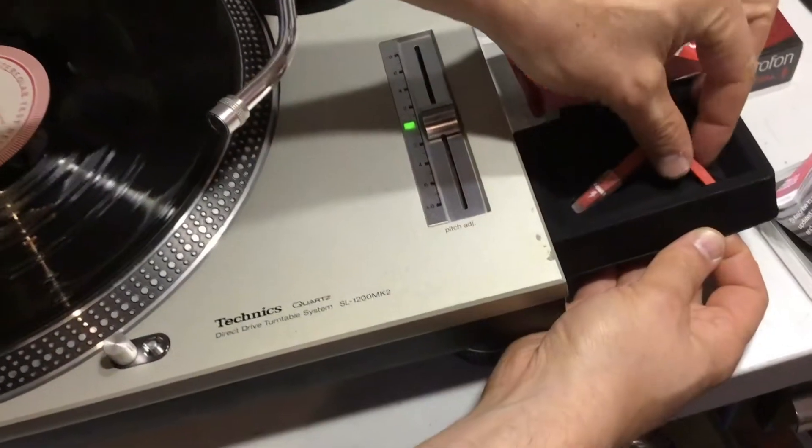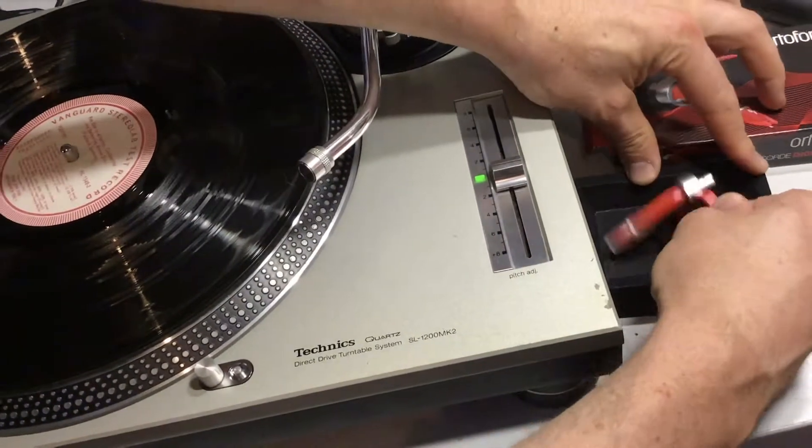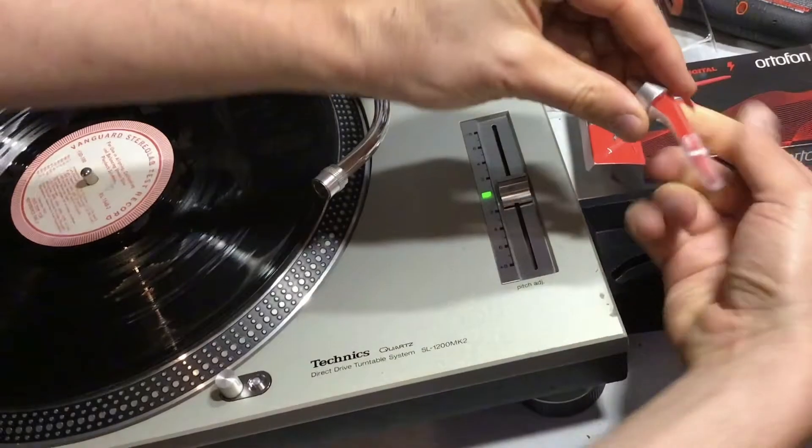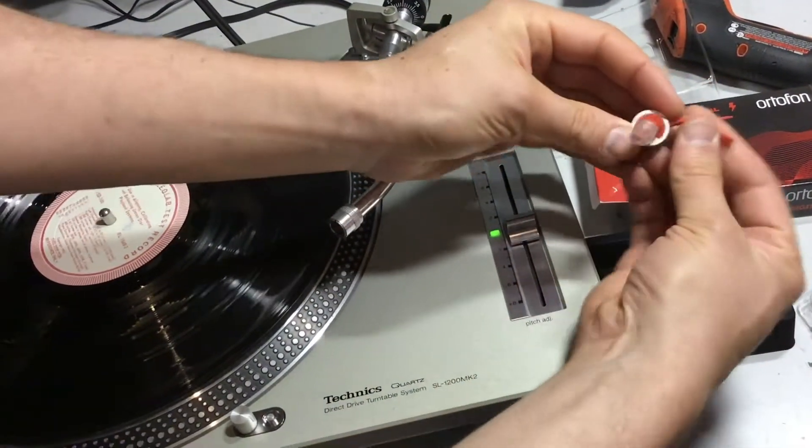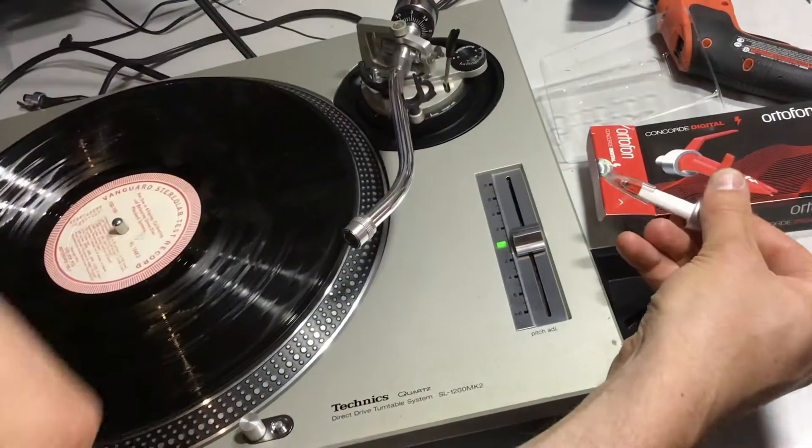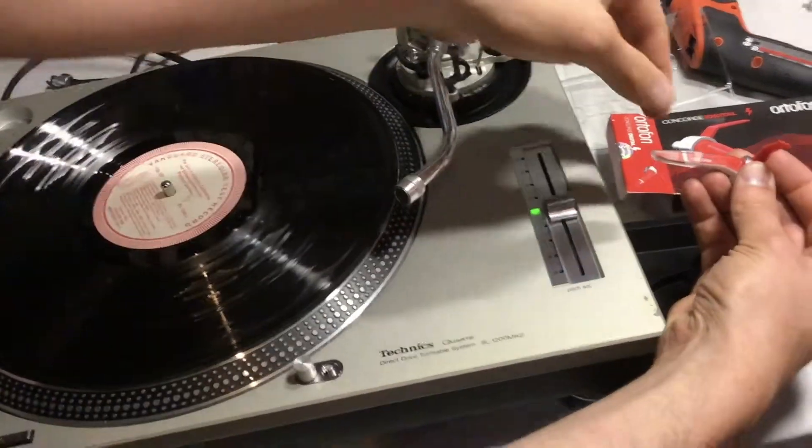It obviously gets picked up by this cartridge here, and then you plug your turntable into your Serato box or whatever, and it allows you to scratch music on an MP3 or a digital audio file just like you would a vinyl record.